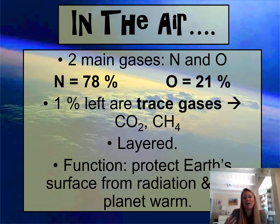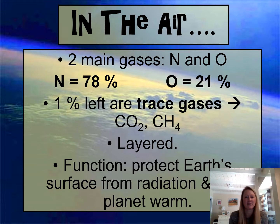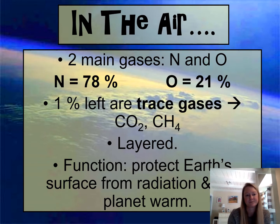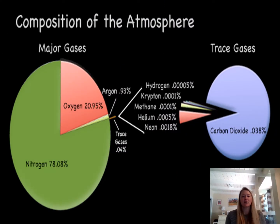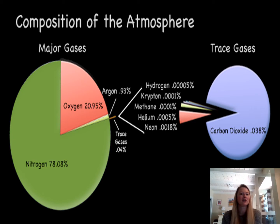The whole main function of the atmosphere is to protect us from solar radiation — stuff coming from the sun — and in doing so, it keeps the planet warm. Here's a nice visual representation of what the atmosphere is made of. You can see 78% is nitrogen, 21% is oxygen, and the rest are trace gases.